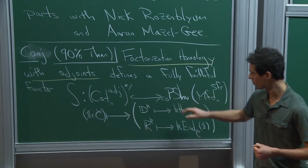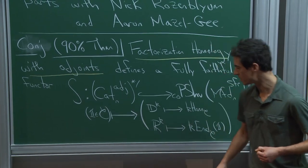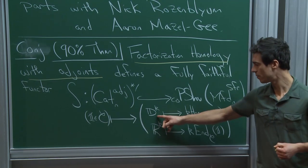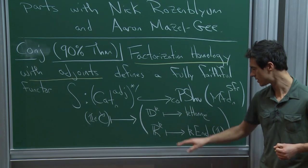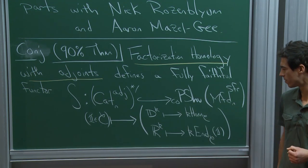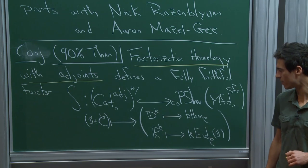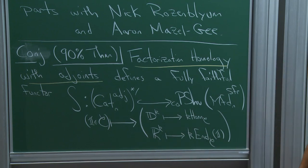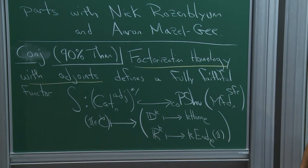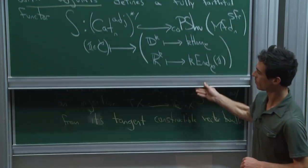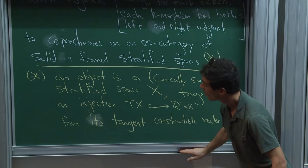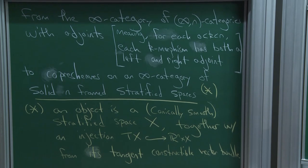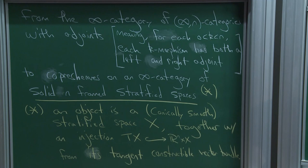It's not any old functor; it's one that has specific values. If you take a pointed n-category, the value on a closed k-dimensional disk will be the space of k-morphisms in the n-category. And the value on R^k will be the space of k-endomorphisms of the distinguished object. The white part repeats what I said in words, and I will indicate some parts of the right-hand side before defining it more thoroughly.